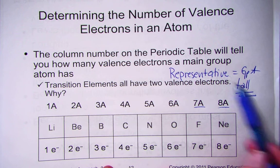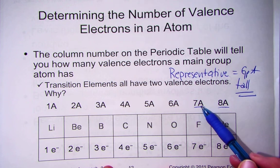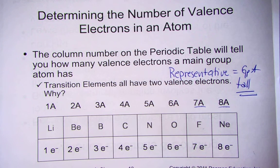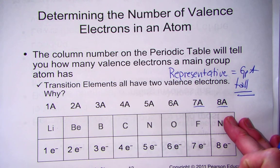The group A's are called representatives. The group number represents their number of valence electrons, and therefore the number of dots that we place around the symbol for making the Lewis dot structure.